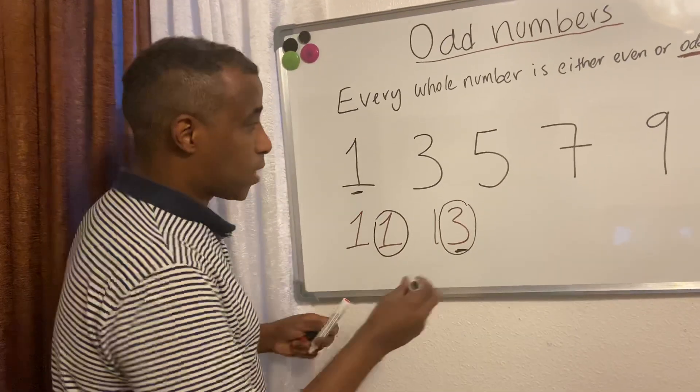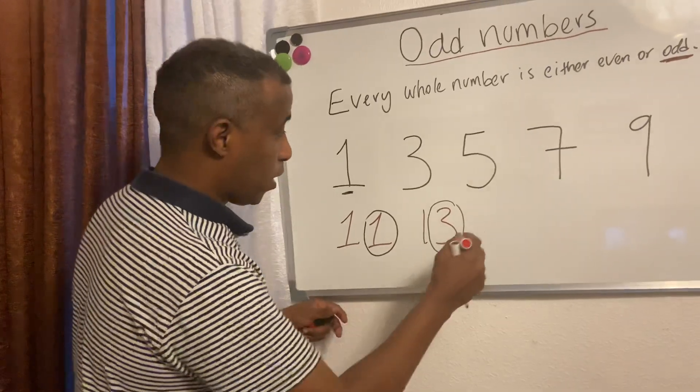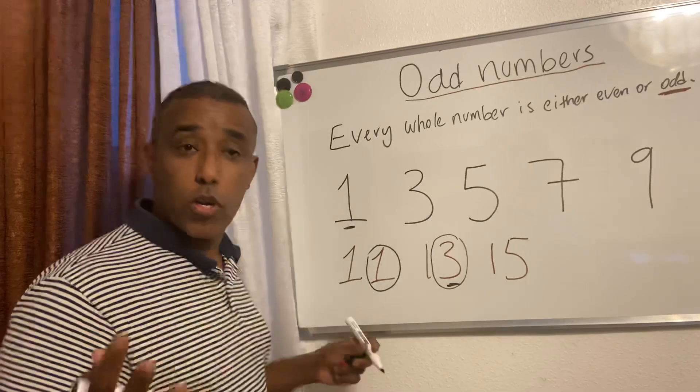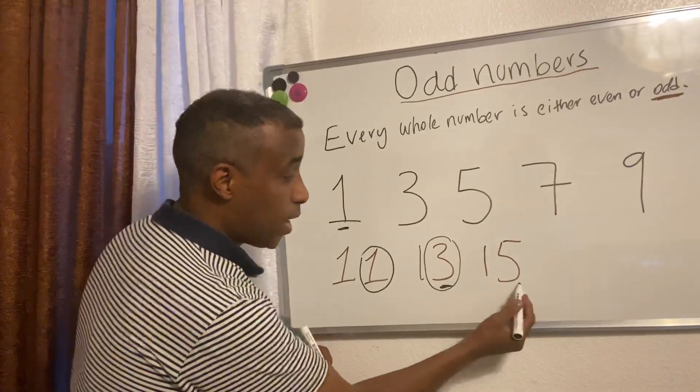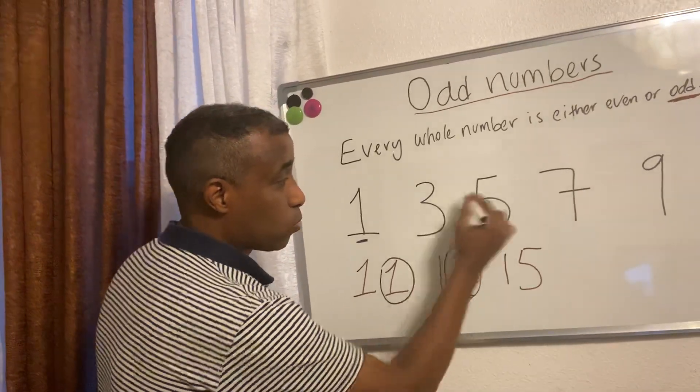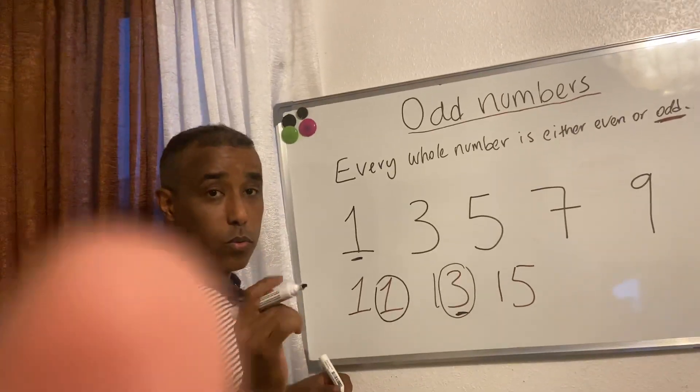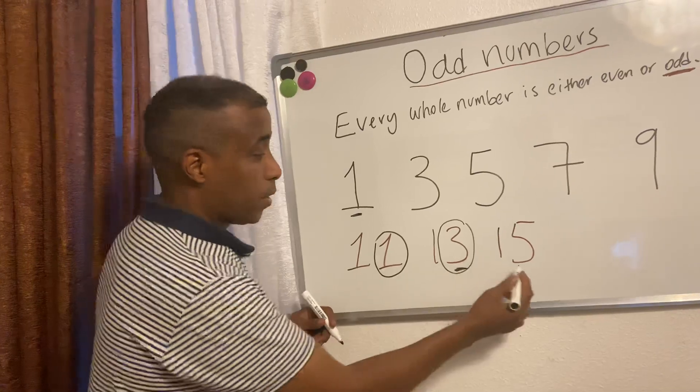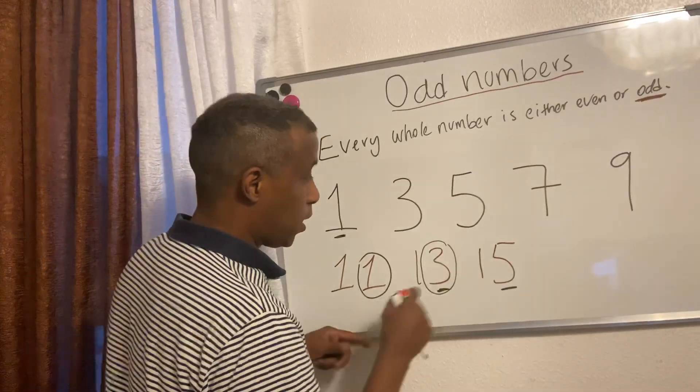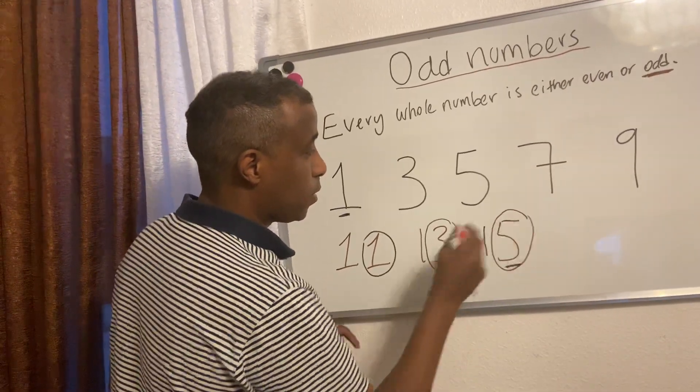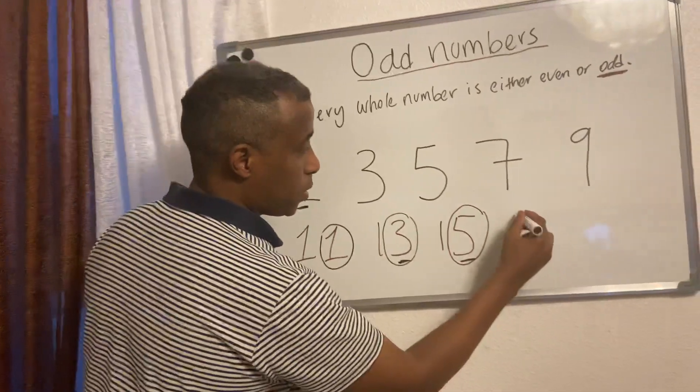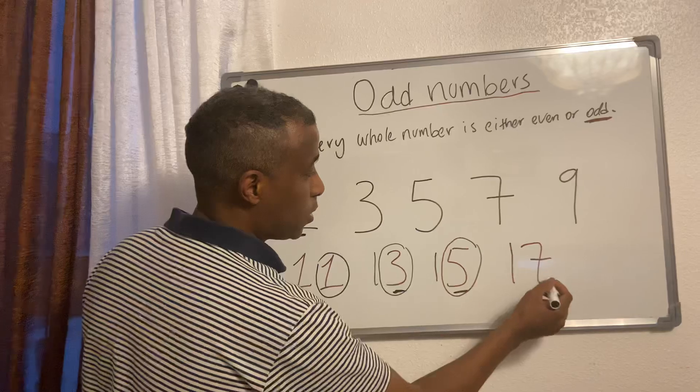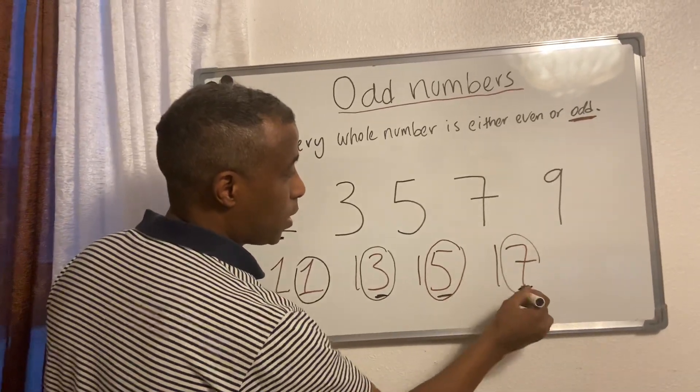Let's do another example: 15. See, that's how you recognize odd numbers. The last number has to be one of these to show you if it's odd or even. This is odd, let's circle it. Let's do number 17. We know 7 is odd, we circle it.